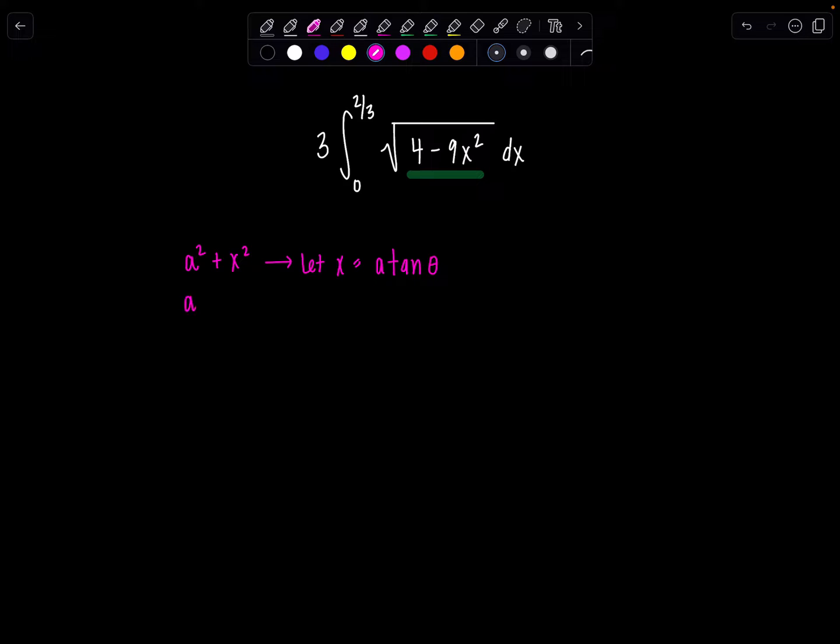When you have a constant squared minus a variable quantity squared, you let x equal a sine theta. And then lastly, if it's the other way around, so variable quantity squared minus constant squared, then you let x equal a secant theta. Those are the only three. Please don't go inventing any new ones.